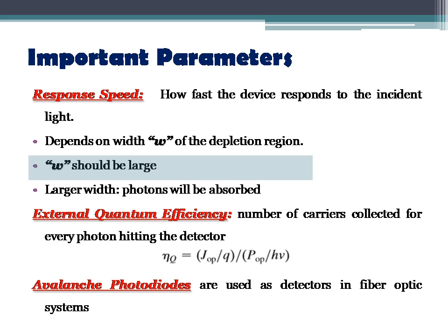The width should be large enough so that incident photons are absorbed in the W region rather than in the N or P regions. In the PIN diode, the intrinsic region is considered the depletion region with width W, which is larger than P or N. If the width is not large enough, photons will be absorbed in N or P — which we do not want. We want photons absorbed in the W region itself, so we ensure W is large enough.